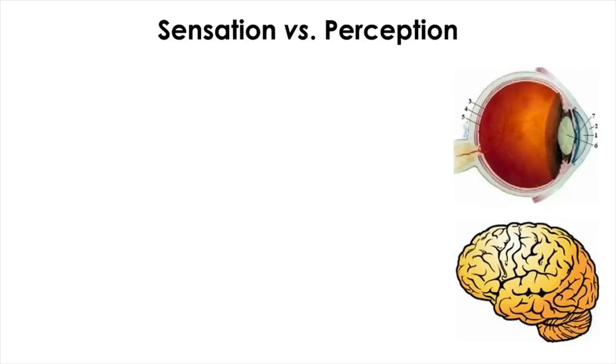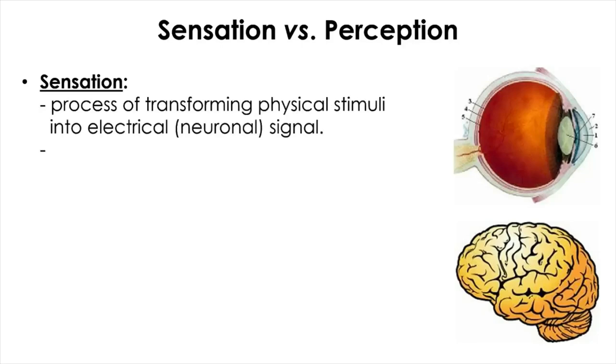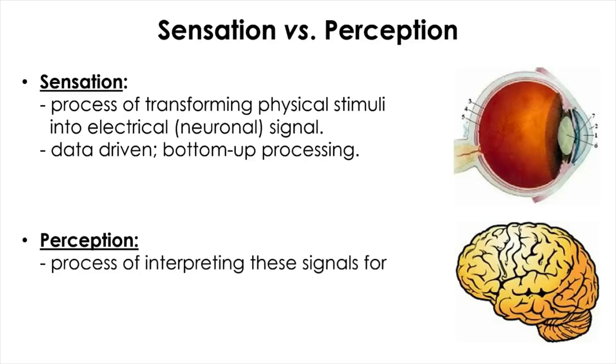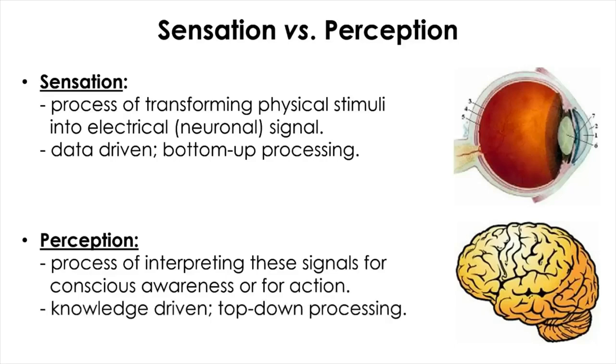So from this, now you see there's a difference between sensation and perception, even though they are used interchangeably in everyday usage. Sensation is the process of transforming physical stimuli into the neuronal signal. Sensation is basically the sensory data coming from the eye to the brain. And this direction of visual information processing is called bottom-up processing or data-driven processing. On the other hand, perception is an organized act of our brain to interpret these signals for conscious awareness or for action. So in this case, the visual experience is driven by the observer's past experience or prior knowledge, which is called top-down processing or knowledge-driven processing.